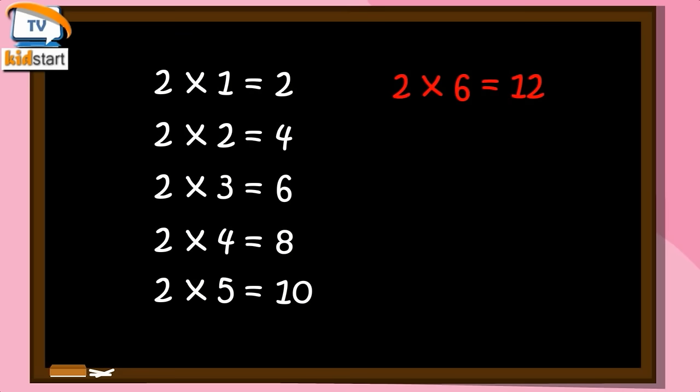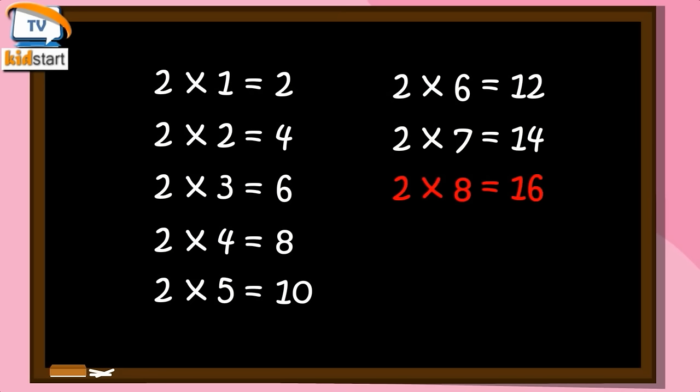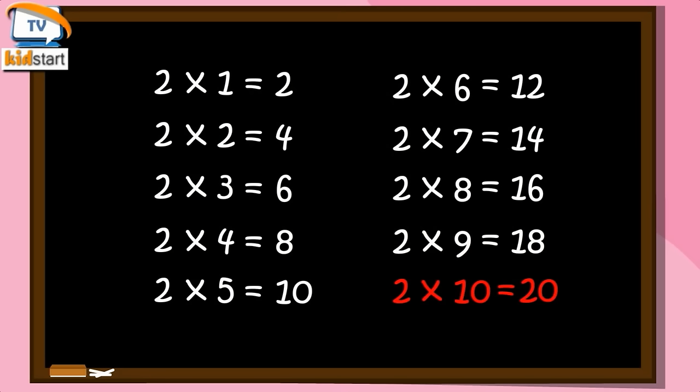Two Sevens are Fourteen. Two Eights are Sixteen. Two Nines are Eighteen. Two Tens are Twenty.